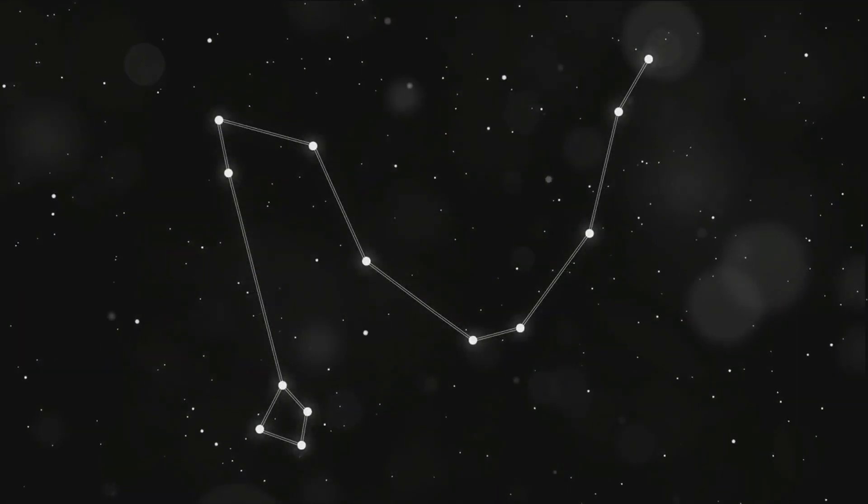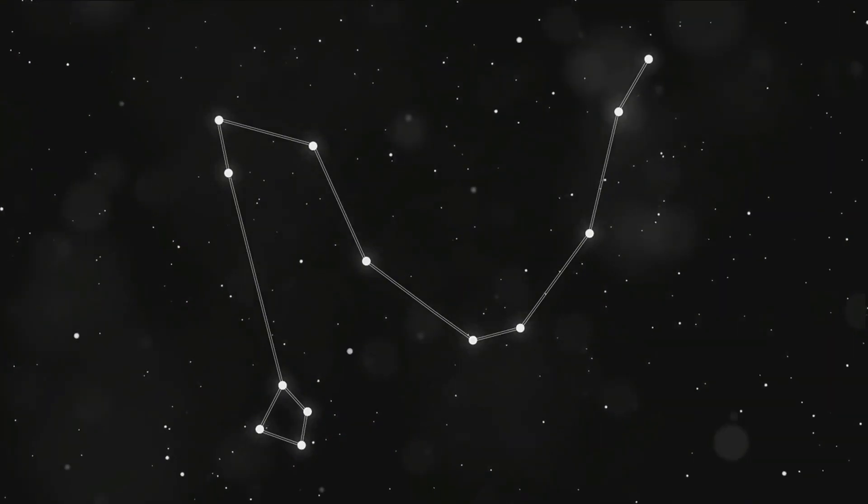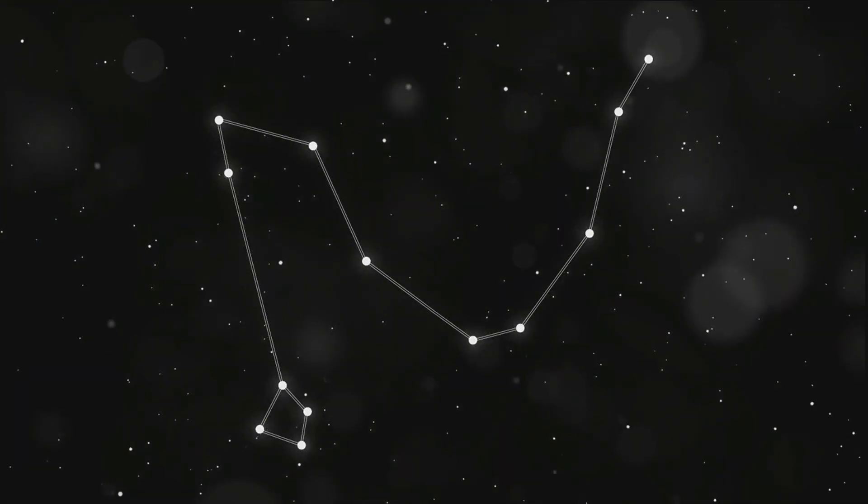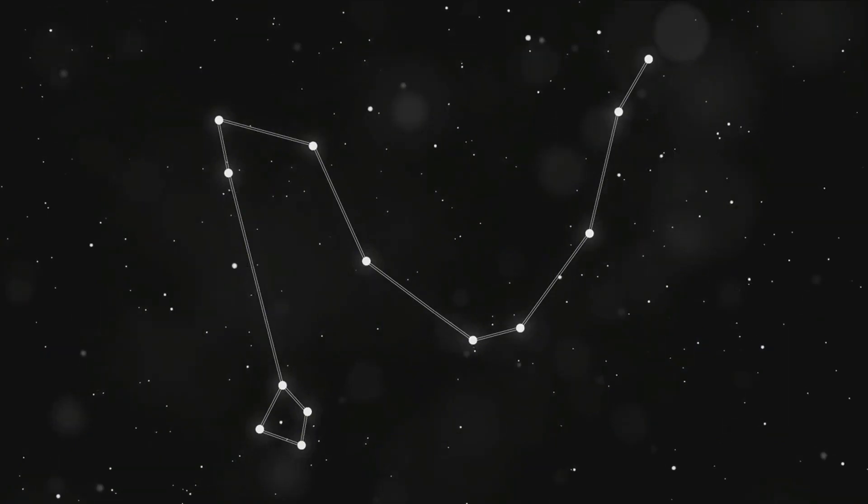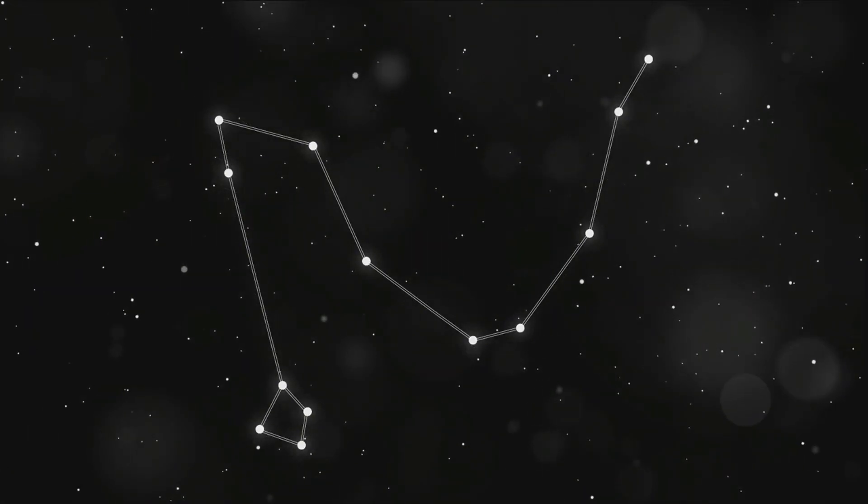First up, meet Orion, the mighty hunter. This constellation is easily recognizable by its three-star belt. According to ancient Greek mythology, Orion was a giant huntsman whom Zeus placed among the stars as the constellation of Orion.